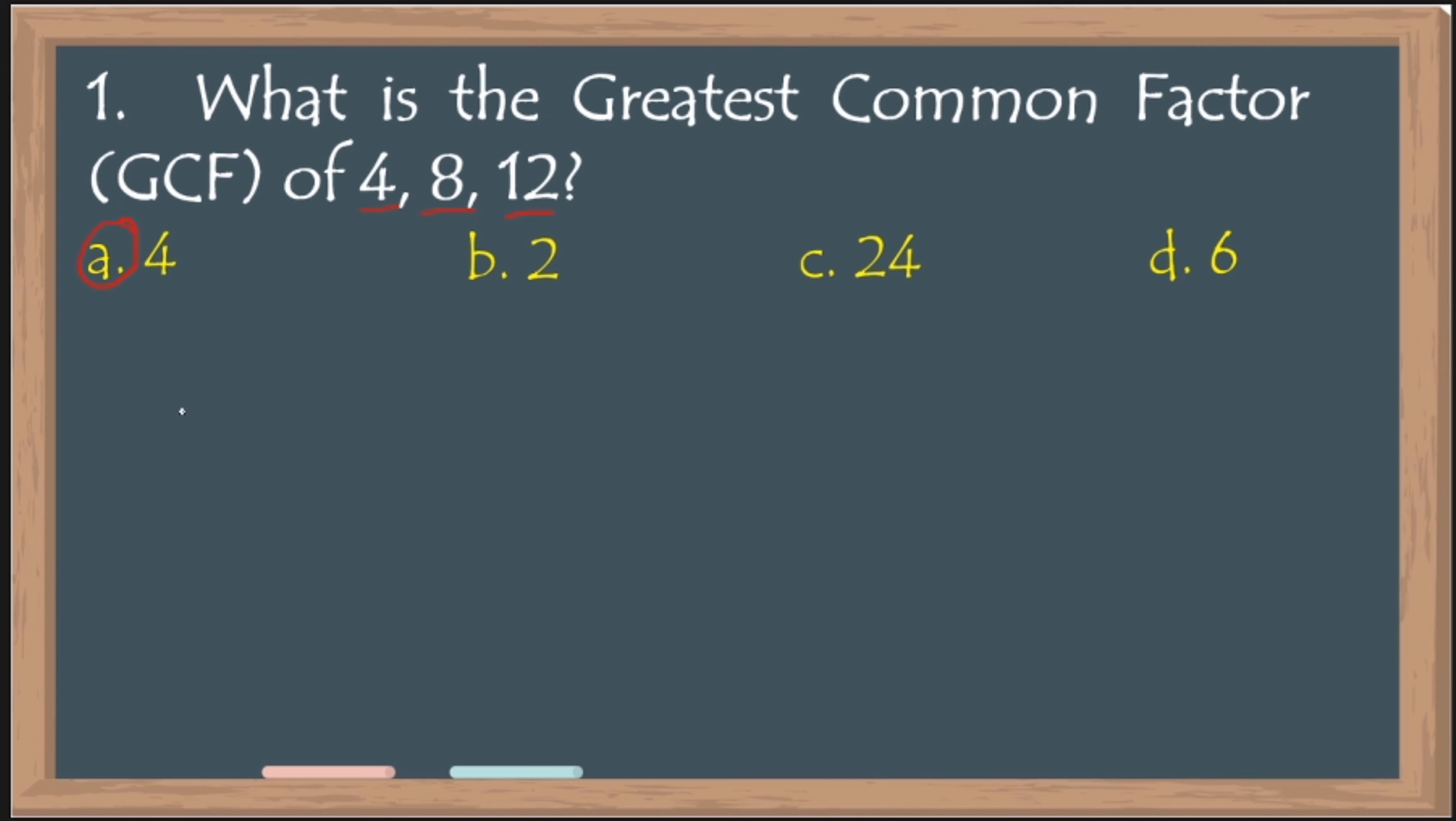Or you can also do this. I-list down mo lahat ng factors ng 4. Factors of 4. So, ang factors kasi nyan ay 1, 2. Ibig sabihin yung mga number na pwede nating i-divide dito, no? 4. Iyan yung factors ng 4. Yung factors naman ng 8 ay 1, 2, 4, 8.